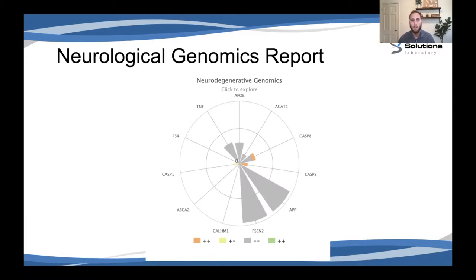We're going to focus on the genes listed in the neurodegenerative genomics area — this is a screen grab from the Opus 23 Explorer tool showing genes related to neurodegenerative diseases. At the very top of the dial is your ApoE gene, but there's also a whole host of other genes. The patient's genomic data is overlaid on those genes: orange on the middle dials indicates homozygous mutations, yellow indicates heterozygous mutations, gray means normal wild type, and green means a beneficial mutation that actually confers less risk of disease.